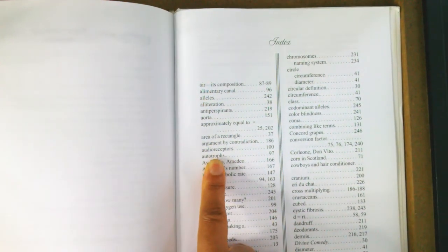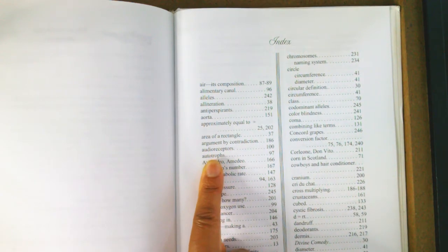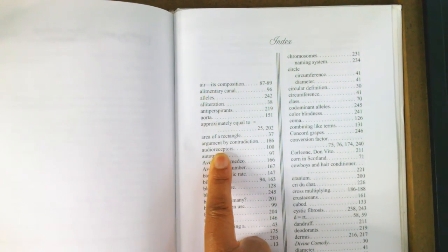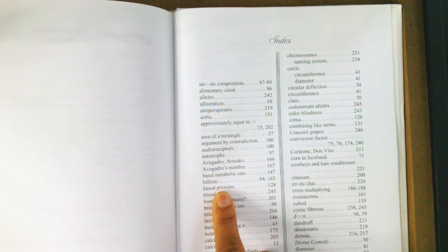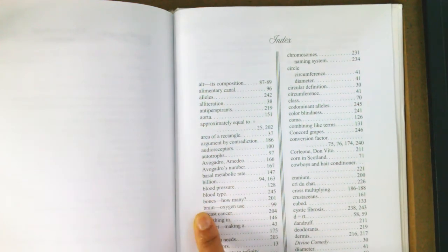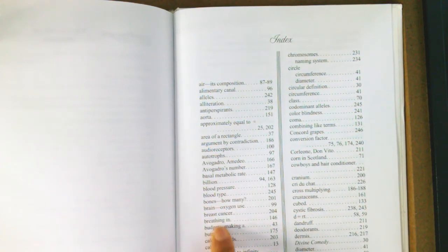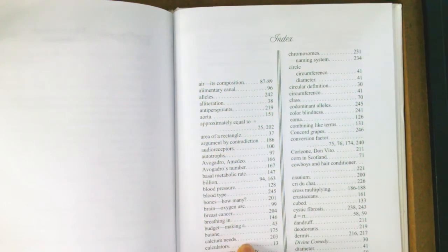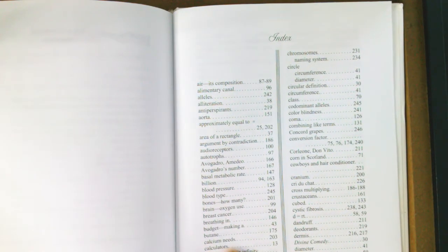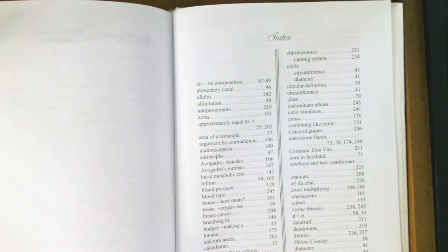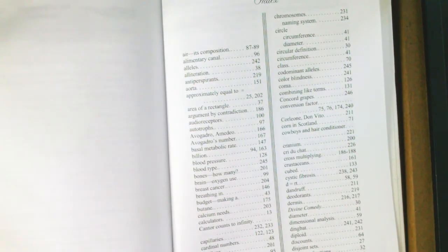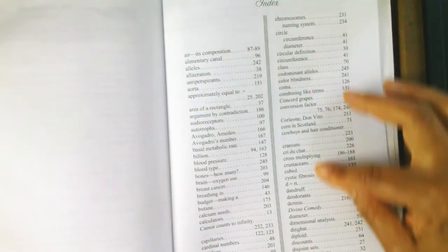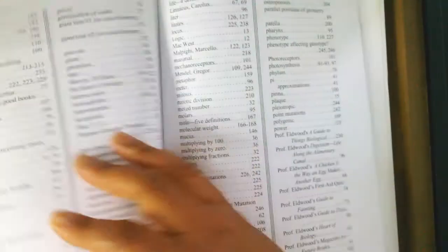Autotrophs—biology. Audio receptors—biology. Blood pressure—biology. Blood types. Bones. Brain. Breast cancer. Breathing in. Calcium. Capillaries. I don't know if you guys can see that, but there we go—capillaries. Look at all of the biology that's in this book.